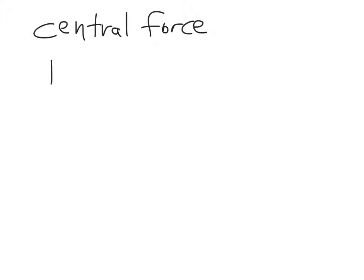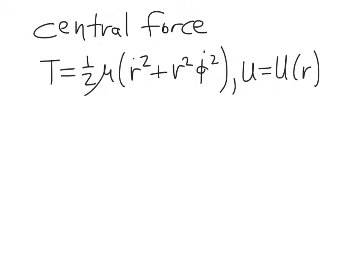You may recall that our kinetic energy for such a system can be written as one-half the reduced mass for the system, r dot squared, where r is the radial distance between the two objects, plus r squared phi dot squared. So that's our kinetic energy. For our central force problem, remember, our potential energy just depends upon the radial distance between the two objects.